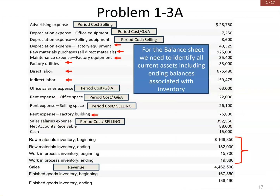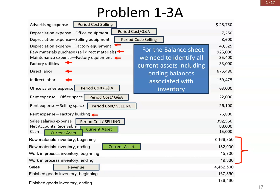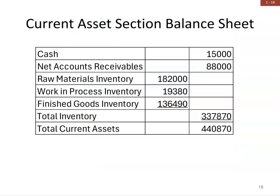Now let's go back to our problem to prepare the balance sheet. We need to identify current assets: net accounts receivable, cash, raw materials ending inventory, work in process ending inventory, and finished goods ending inventory. On the balance sheet, we start with cash, then accounts receivable net (which means we've taken out allowance for uncollectables), then list raw materials, work in process, and finished goods to get total inventory, and add them all up to get total current assets. That covers what I'm going to cover for Chapter 1.